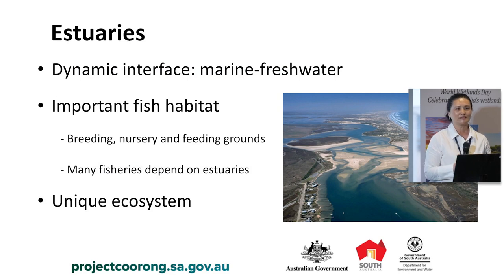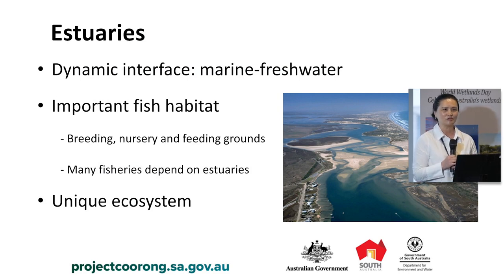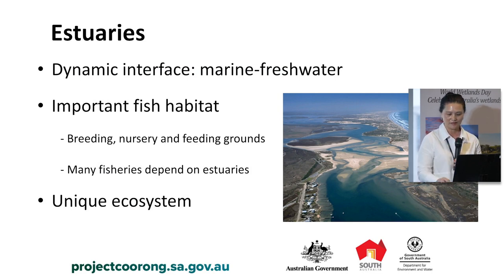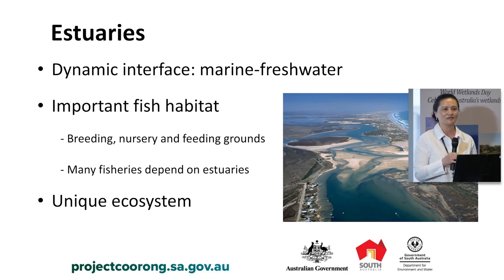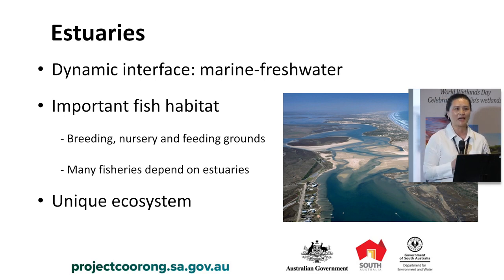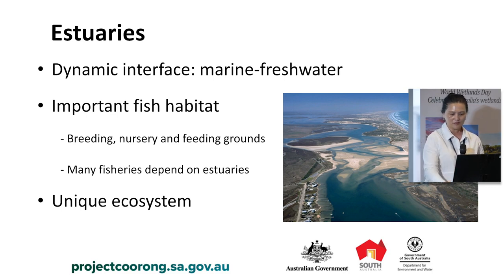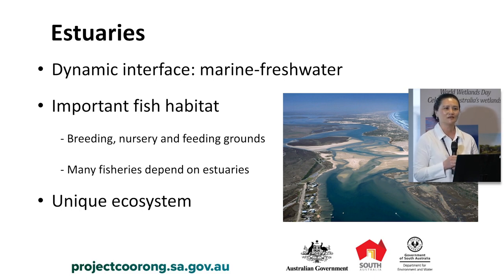Estuaries represent a dynamic interface between freshwater and marine environments. They need freshwater to maintain system health and are quite important fish habitat. Many species use estuaries as nursery ground, feeding ground, or refuge area. Many fisheries are dependent on estuaries, and they are unique ecosystems - many estuaries are Ramsar sites, including the iconic Coorong.